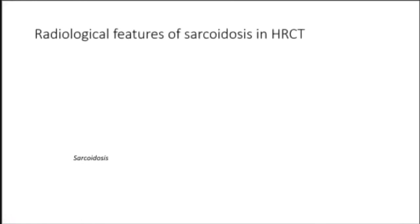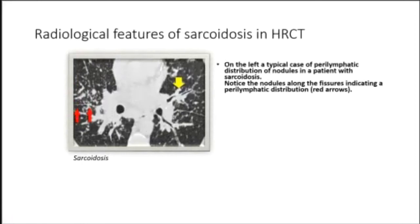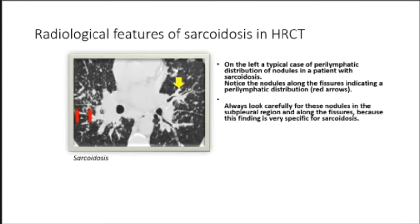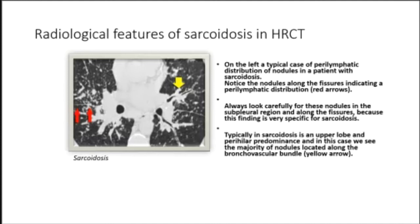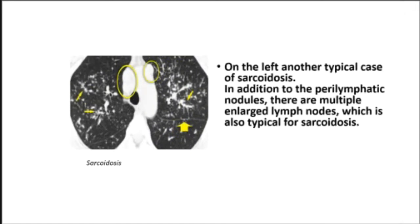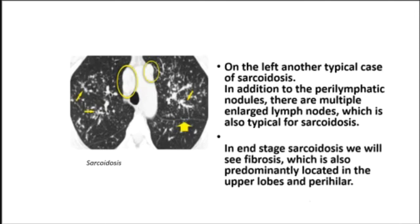In sarcoidosis, there is a typical perilymphatic distribution of nodules. Notice the nodules along the fissures indicating perilymphatic distribution — always look carefully in the subpleural region and along the fissures, as this finding is very specific for sarcoidosis. Typically, sarcoidosis shows an upper lobe and perilymphatic predominance, with nodules located along the bronchovascular bundle. Multiple enlarged lymph nodes are also typical. In end-stage sarcoidosis, fibrosis is also predominantly located in the upper lobes.